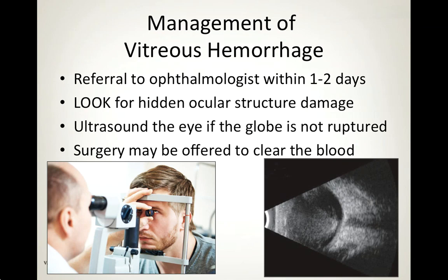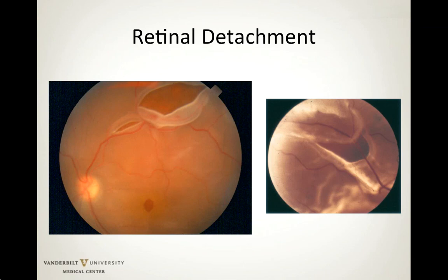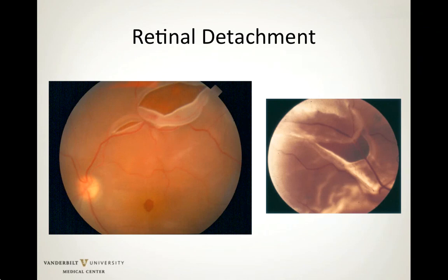Let's move on to our second clinical entity: retinal detachment. The retina is a thin layer of neurologic tissue containing photoreceptors and blood vessels, normally lining the inner wall of the eye, similar to wallpaper lining a room. The retina can detach from its wall during any type of trauma, caused by a retinal tear or hole. Sometimes, but not always, retinal detachment symptoms are preceded by flashes of light and floaters, and detachments can have associated vitreous hemorrhages.